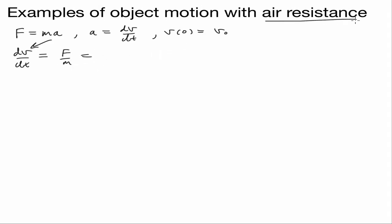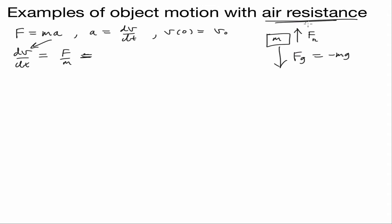In our examples we're going to include two forces. We have our mass with a force of gravity Fg pointing down, equal to negative mg. There's also an upward force Fr, which is some function of air resistance. In a previous video we studied Fr equal to negative Cv — this is what we call linear air resistance.